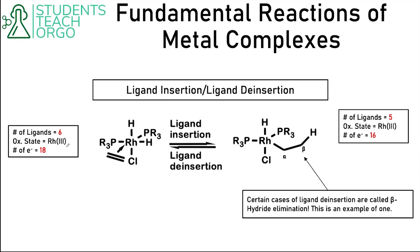In these reactions, the number of ligands changes — six ligands on the left, five on the right, because one of these ligands moved to another ligand. The oxidation state doesn't change; however, the number of electrons in the complex does. I also wanted to mention that certain cases of ligand de-insertion are called beta hydride elimination. If this is the alpha carbon and this is the beta carbon, we're eliminating this beta hydride when it moves over to rhodium. So if you hear the term beta hydride elimination, just recognize that it refers to a specific type of ligand de-insertion.